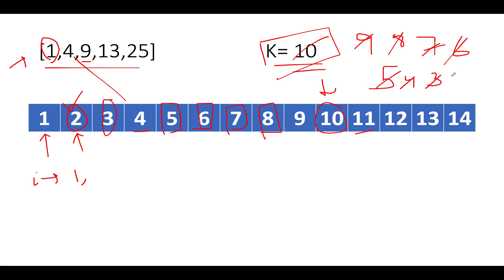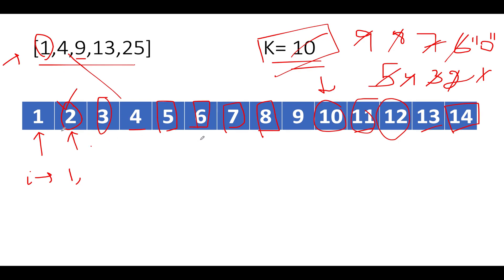Continuing: i=11 and 12 are not in the array, consume each. i=13 is in the array, skip. i=14 is not in the array, consume it, and k reaches 0. The elements added are 2, 3, 5, 6, 7, 8, 10, 11, 12, 14. Summing: 2+3=5, +5=10, +6=16, +7=23, +8=31, +10=41, +11=52, +12=64, +14=78. The answer is 78.